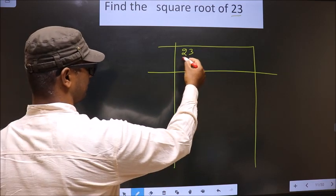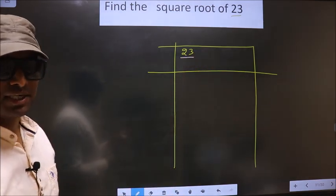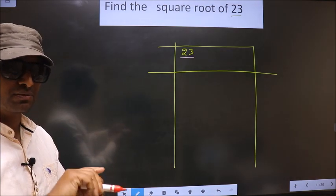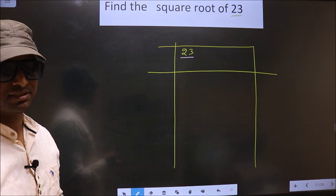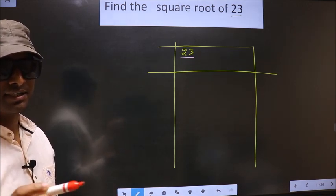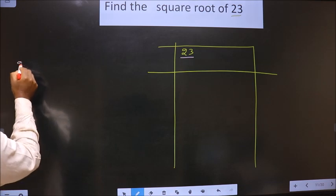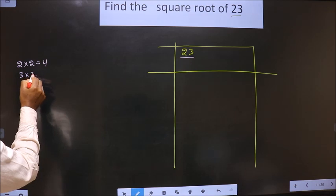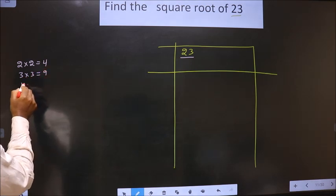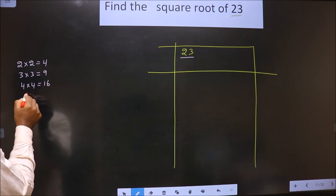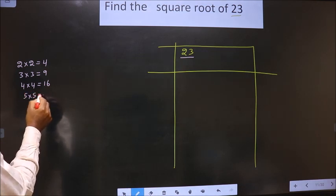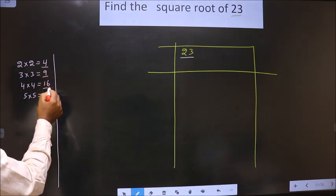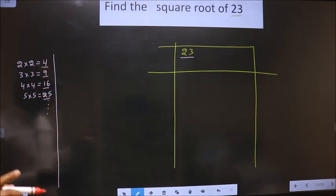Now here we have 23. 23 is not a perfect square, so we should check which two perfect square numbers 23 lies between. The perfect square numbers are: 2 into 2 is 4, 3 into 3 is 9, 4 into 4 is 16, 5 into 5 is 25, and so on. These numbers are called perfect squares.